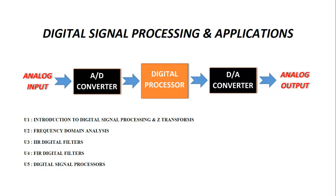For digital signal processing, you need to have a digital processor with an A/D converter, D/A converter, and an analog input, and you will get a final analog output. Many multiprocessor systems, computers, and other devices use a digital processor for faster computation and multitasking. This digital processor is capable of only understanding digital signals. The reason for preferring digital signals over analog signals is that these signals are faster and computation of them is faster.